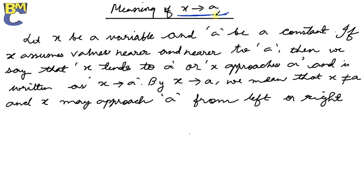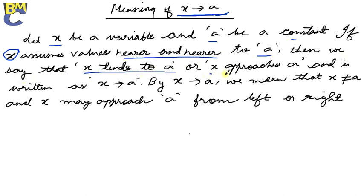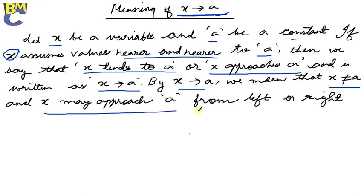What is the meaning of x tends to a? Let x be a variable and a be a constant. If x assumes values nearer and nearer to a, then we say that x tends to a, or x approaches a, written as x tends to a. By x tends to a, we mean that x is not equal to a, and x may approach a from the left or the right.